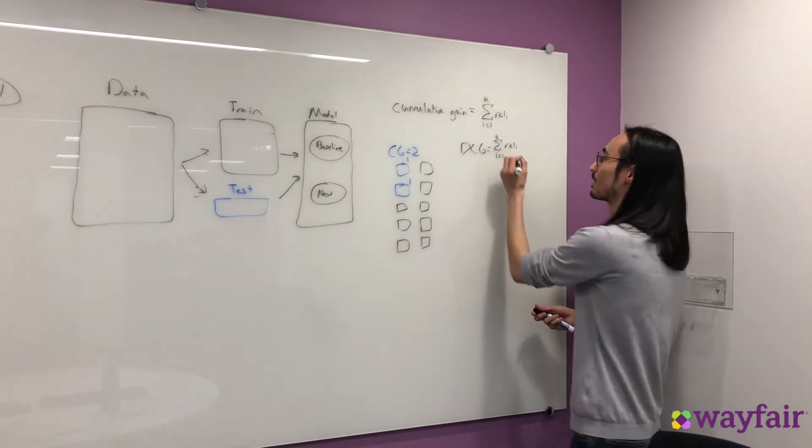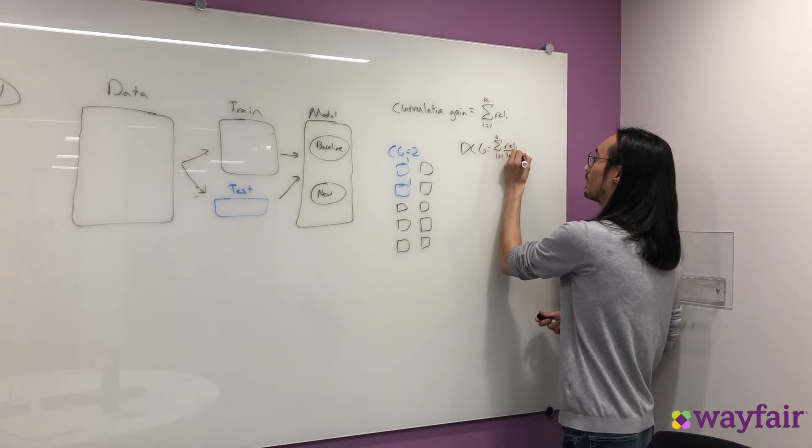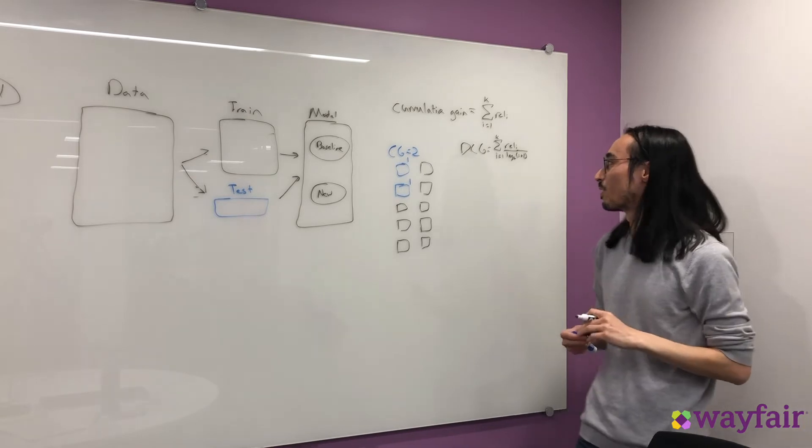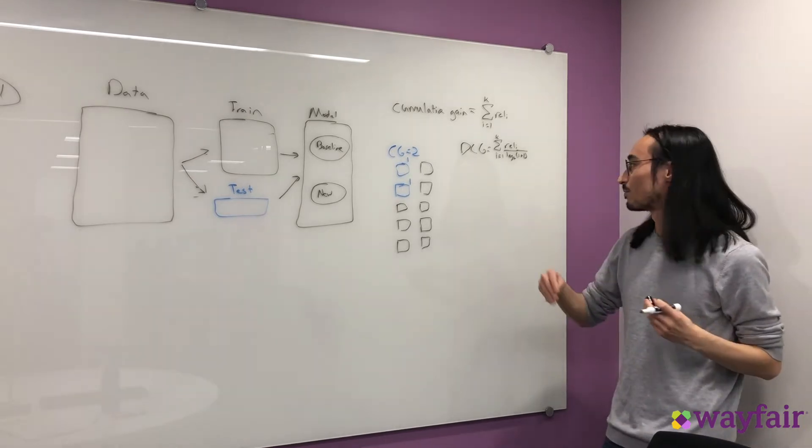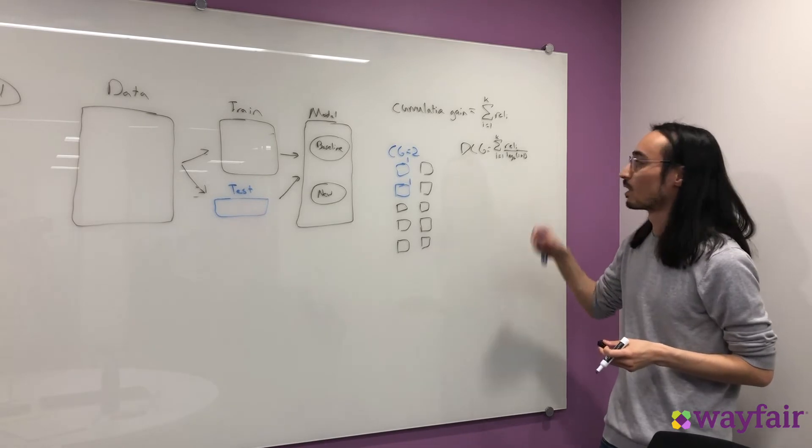A really common formula for this is just the base 2 log of i plus 1. So this gives us the effect of as we go further down the sort, so as i grows, we'll be reducing the relevance score.